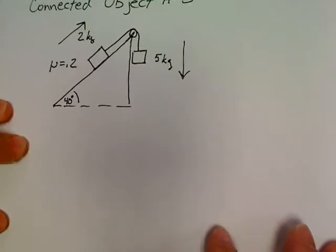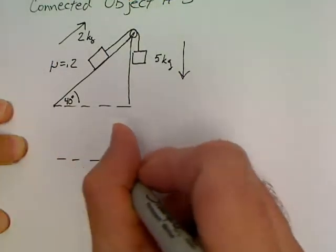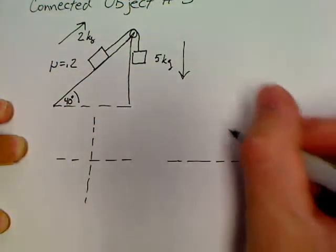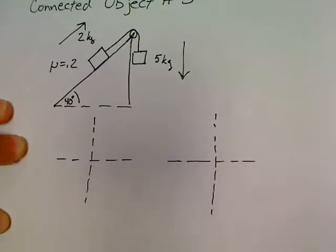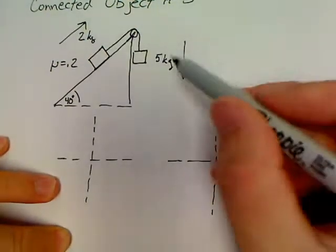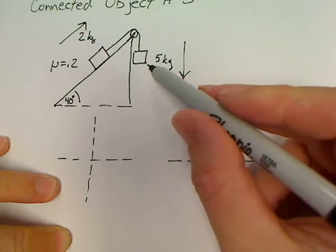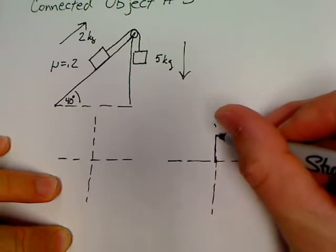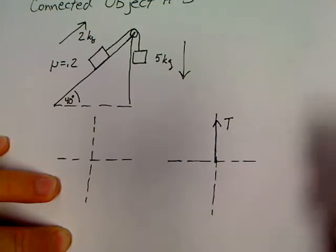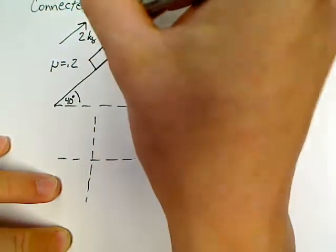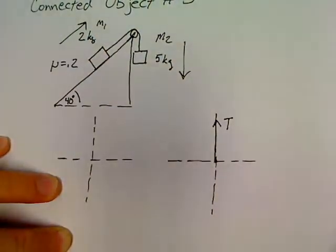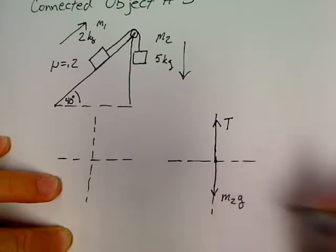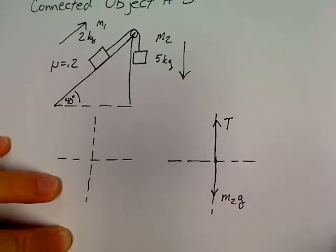All right. So let's do a sum of the forces or a free body for each of these two objects. And we'll start with our sets of crosshairs here. Let's do the one on the right first. It'll be much easier because you're connected by the string or rope. So we're going to have a tension going up. I'm going to call these M1 and M2. So I've got M2G going down. And that's the only thing present on that object.